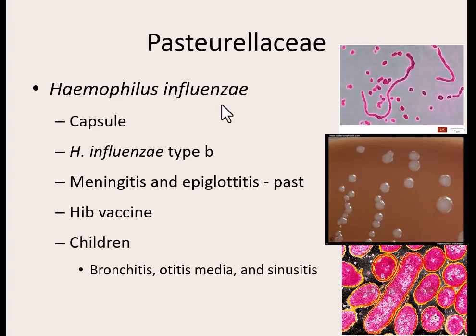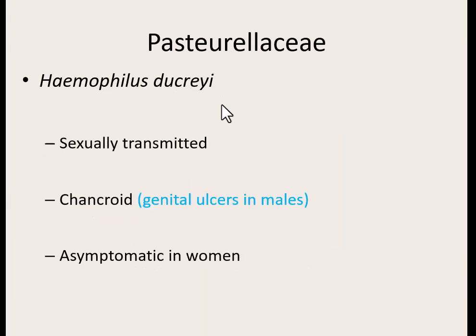A unique thing about Haemophilus influenzae is that it is pleomorphic. Although it is gram-negative and bacilli-shaped, a lot of times we see long rods, short rods, and some that almost look circular. It is pleomorphic, so it can vary in its shape.